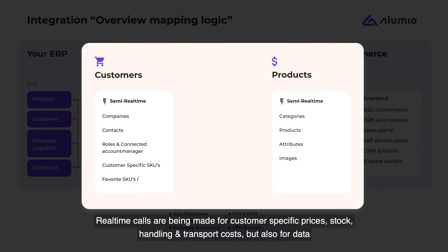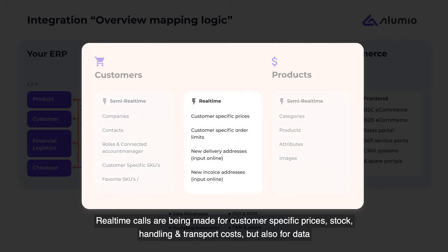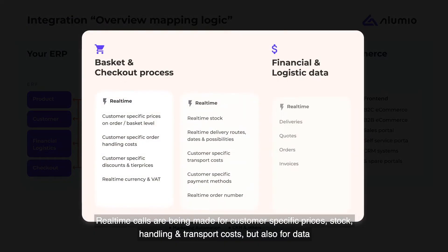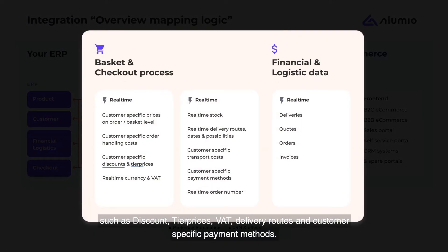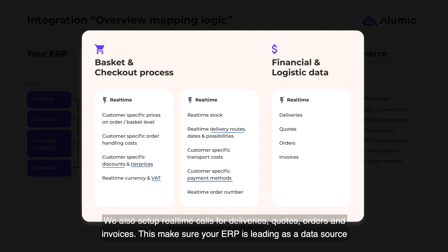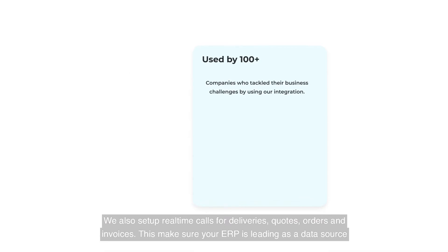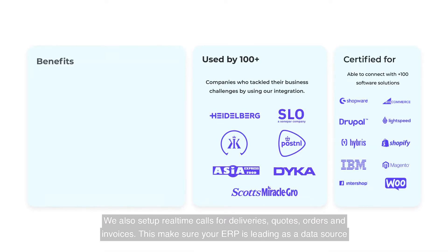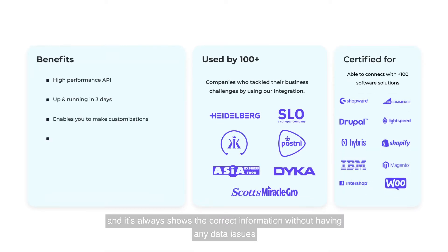Real-time calls are being made for customer-specific prices, stock, handling and transport costs, but also for data such as discount, tier prices, VAT, delivery routes, and customer-specific payment methods. We also set up real-time calls for deliveries, quotes, orders, and invoices. This makes sure your ERP is leading as a data source and always shows the correct information without having any data issues.